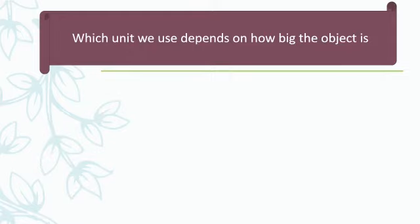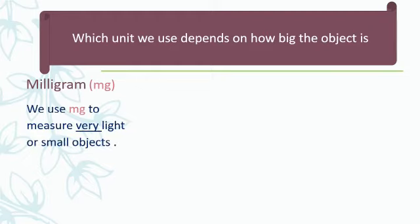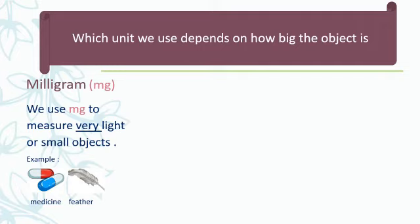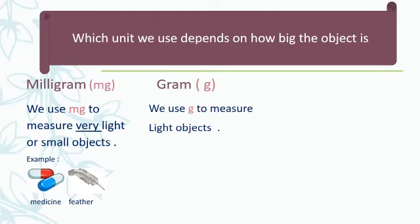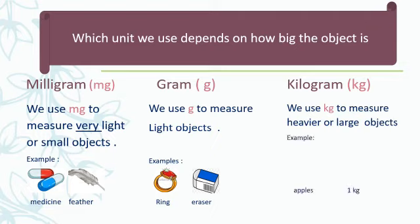Which unit we use depends on how big the object is. We have three units in this lesson. The first one is milligram. We write it mg. We use milligram to measure the mass of very light or small objects, for example medicine or a feather. The second unit is gram. We write it g. We use gram to measure the mass of light objects, for example a ring or an eraser. The third one is kilogram. We write it kg. We use kilogram to measure the mass of heavier or large objects, for example apples or one kilo of sugar.